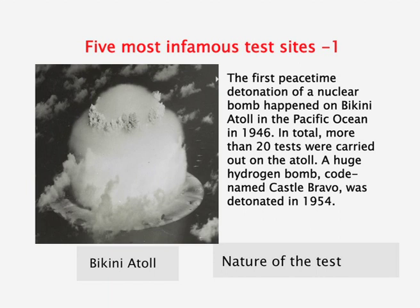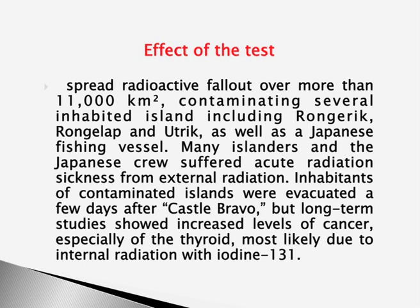The Bikini Atoll: the first peacetime detonation of a nuclear bomb happened at the Bikini Atoll in the Marshall Islands in the Pacific Ocean in 1946. In total, more than 20 tests were carried out. A huge hydrogen bomb codenamed Castle Bravo was detonated at Bikini Atoll in 1954, spreading radioactive fallout over more than 11,000 square kilometers and contaminating several islands as well as Japanese fishing vessels. Many islanders and Japanese crew suffered acute radiation sickness. Long-term studies show increased levels of cancer, especially thyroid cancer, most likely due to internal radiation from iodine-131.